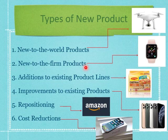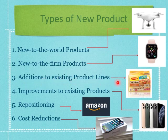Number three is an addition to existing product lines, where you already have items in the product line but you want to add a new one. For example, in this picture you can see Maggi, which is an oatmeal product. Previously, Maggi never produced this particular flavor — noodles made from oatmeal. So when they add this oatmeal noodle to their existing instant noodle line, it is considered an addition to an existing product line.